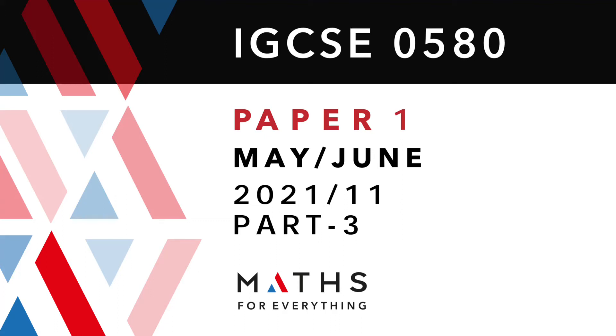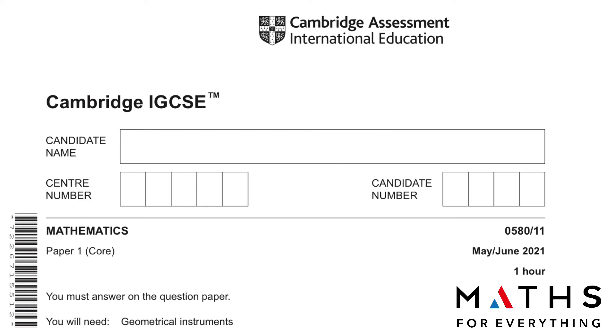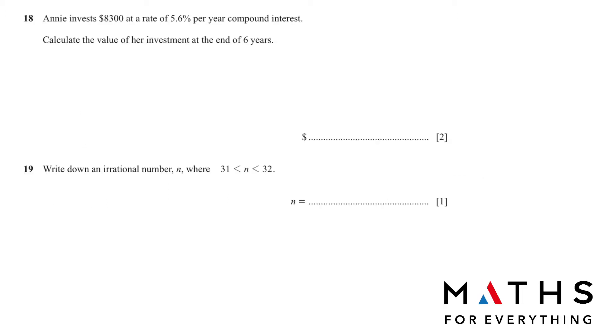Assalamualaikum, welcome to my channel. Today we are going to solve Cambridge IGCSE Mathematics Paper Core Variant 1, May-June 2021, from question number 18 onwards. Before we start, do subscribe to my channel and if you like the video, share it with your friends and post a comment in the comment section. Let's start.